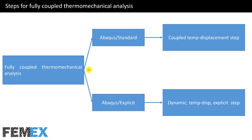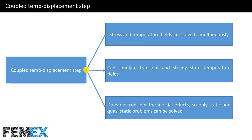Now I want to talk about fully coupled thermo-mechanical analysis. We can use both Abaqus structural solvers for doing fully coupled thermo-mechanical analysis. If we want to use the Abaqus Standard solver, we must use the coupled temp displacement step. If we want to use the Abaqus Explicit solver, we must use the dynamic temp explicit step. In the coupled temp displacement step, stress and temperature fields are solved simultaneously, and this step can simulate transient and steady-state temperature fields.